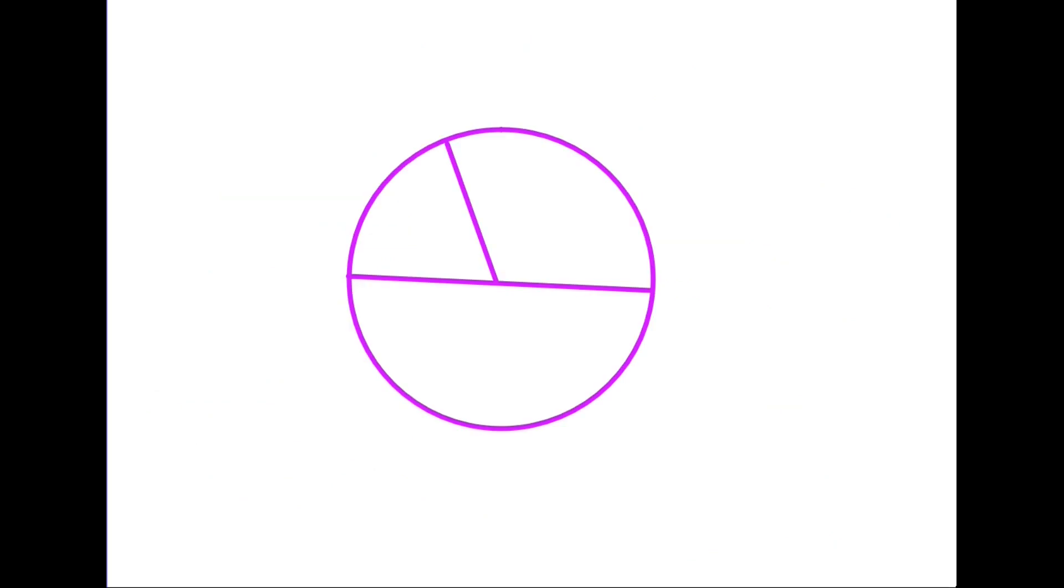And finally we are going to have a look at a circle. Rather than considering the properties of the circle, it is more important that we know the names of some of the parts of a circle. So let's just have a look at three. The first one is a line that goes through the center straight across and cuts a circle in half, and we call that line diameter.